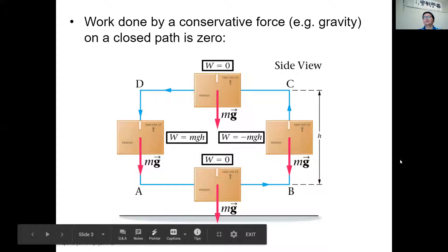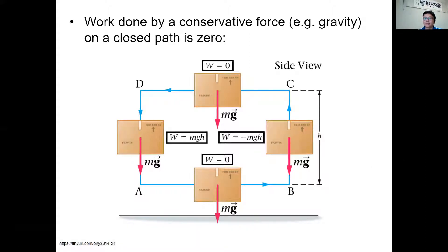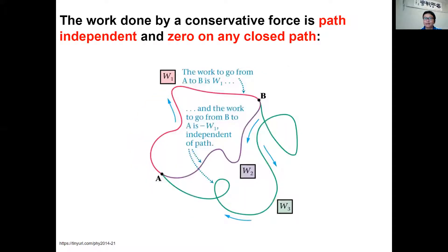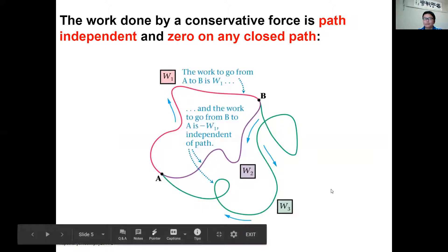For work done by a conservative force, if it's done on a closed path, then it's zero. Otherwise, for a non-conservative force, work done on a closed path is actually not zero. And if you have work done by a conservative force via two different paths, the work done should be path-independent, as long as the initial and final positions are the same. For a non-conservative force, it's path-dependent.